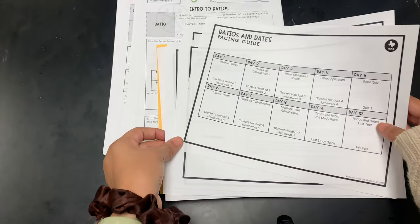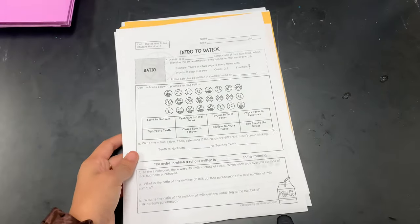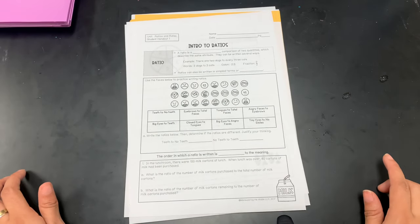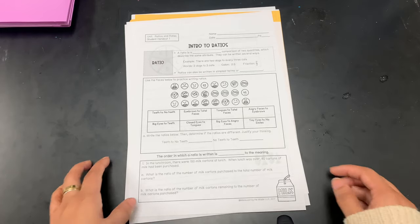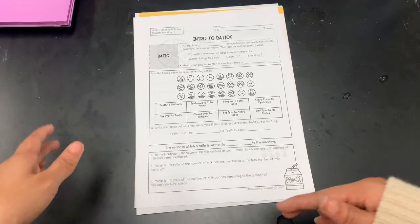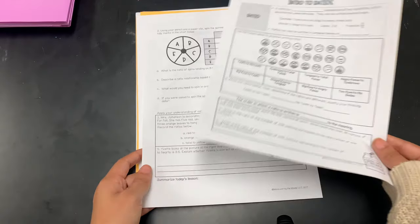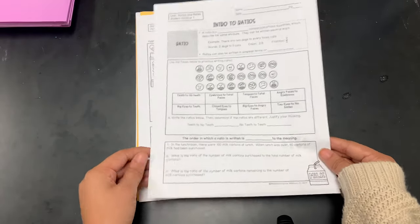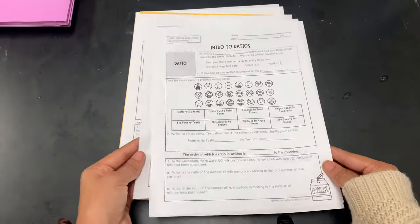Those things I'm going to keep out and they're going to go in the front pocket of the binder. So then you're going to want to divide all of your resources into days or whenever you're going to be doing the topic. So I pretty much have one topic per day. So the first thing is the intro to ratios handout that the TPT seller gave and then the homework.